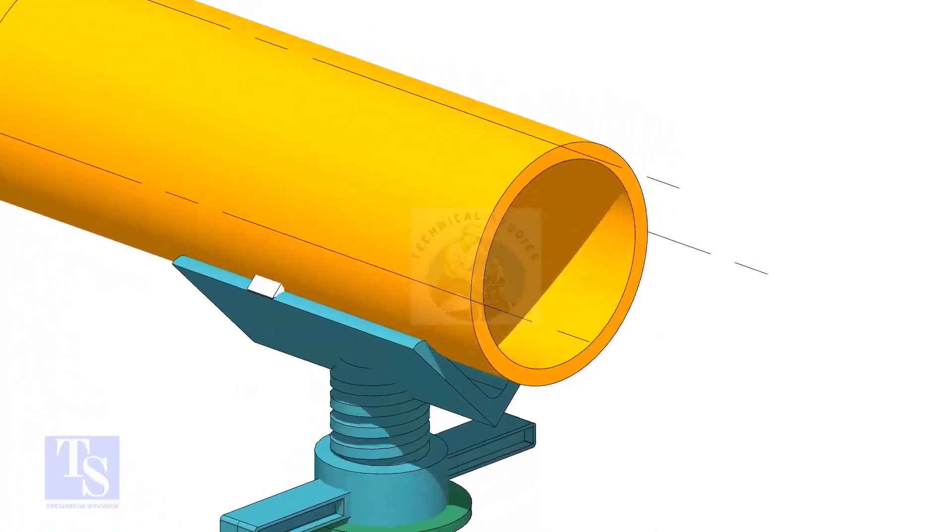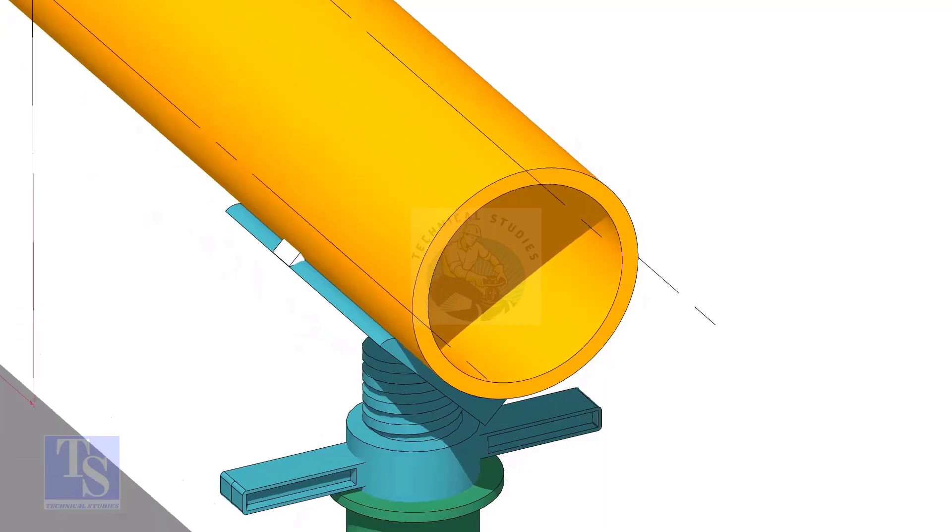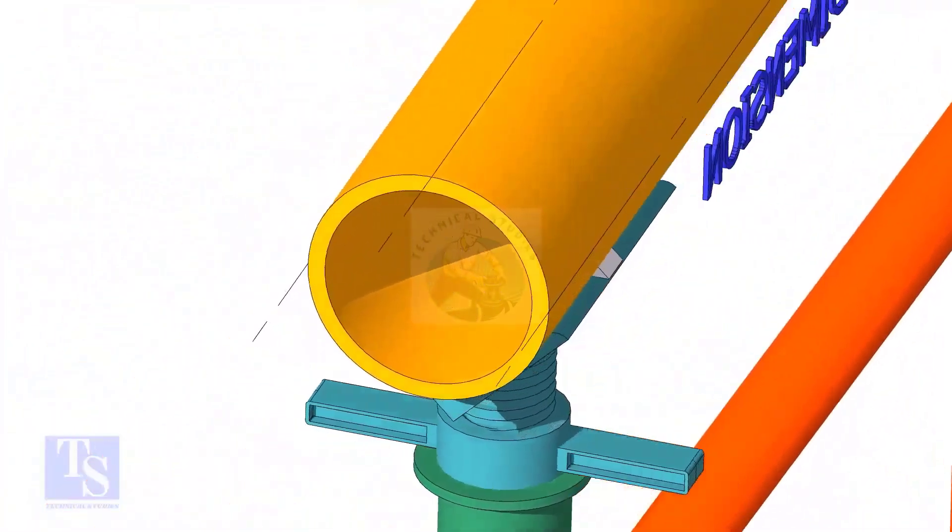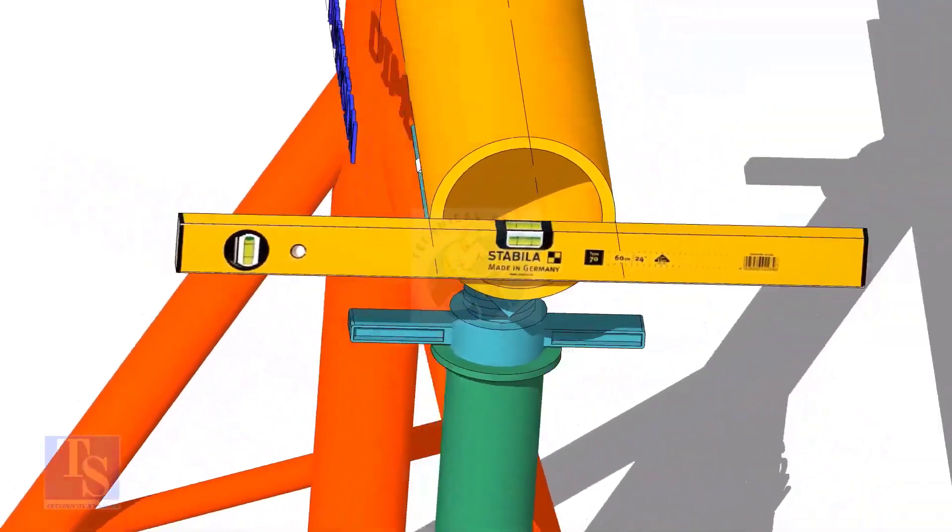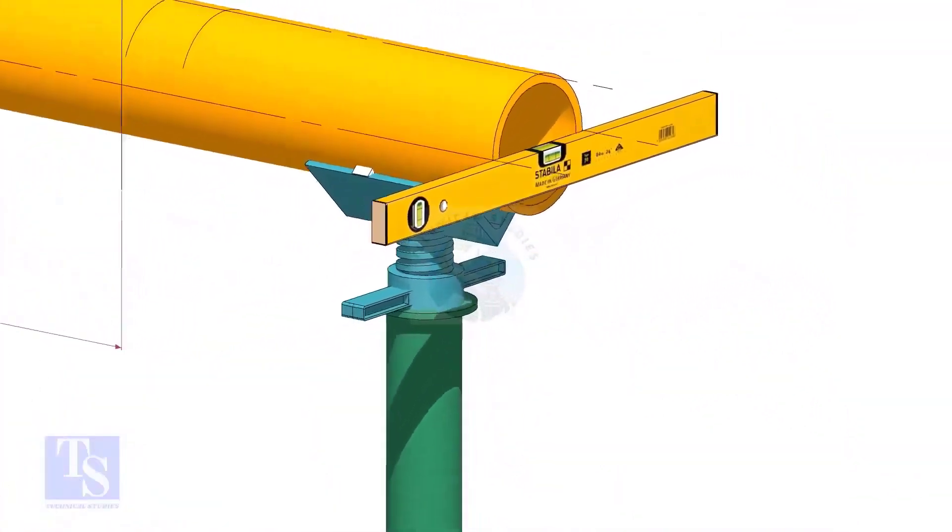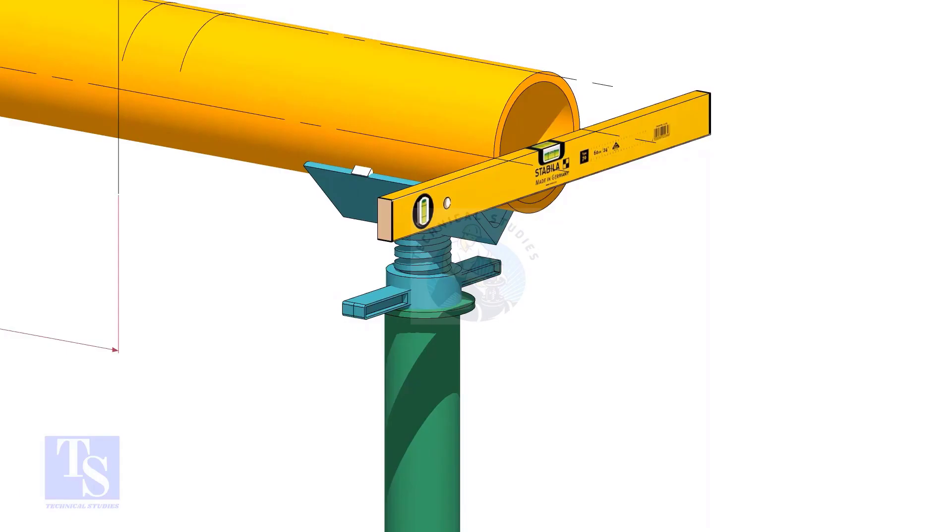After leveling the pipe, mark the center line and two quarter lines. Arrest the pipe, if required, make small tack welds.